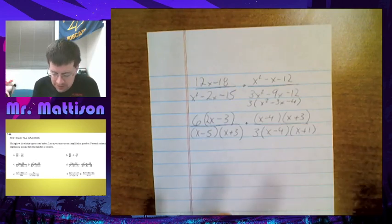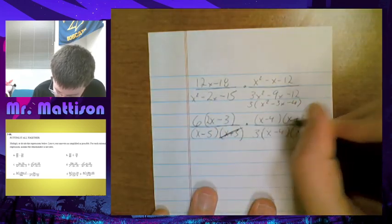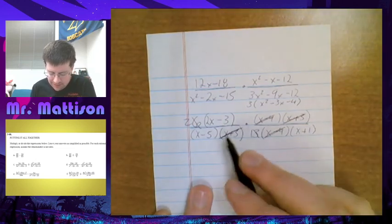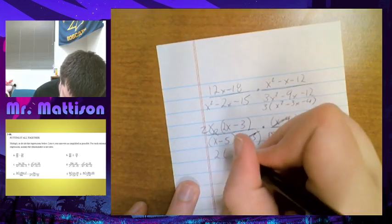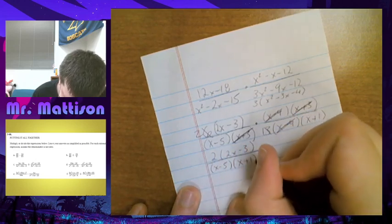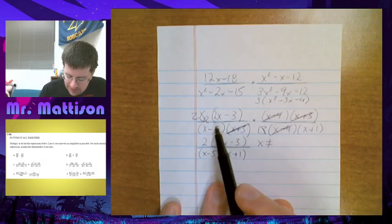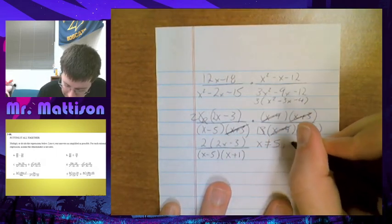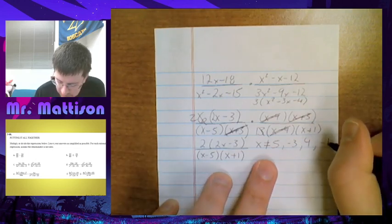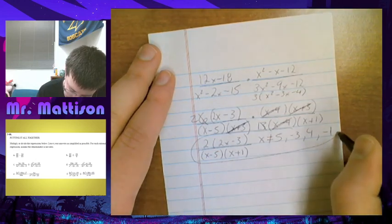Now all I've got to do is cancel things out. x minus 5 — nothing cancels. 2x minus 3 — nothing cancels. x plus 3 can be reduced at this point. x minus 4 and x minus 4 cancel. The 6 and the 3 become 1 and 2. Nothing else reduces. So all I'm left with is 2 times 2x minus 3 over x minus 5 times x plus 1. Domain restrictions: x cannot be 5, cannot be negative 3, cannot be 4, and cannot be negative 1 — based off of what I see on the bottom of any of my fractions.